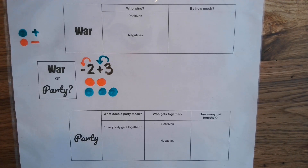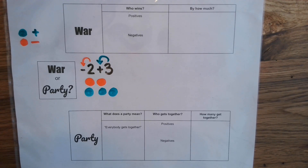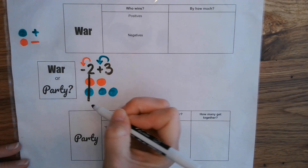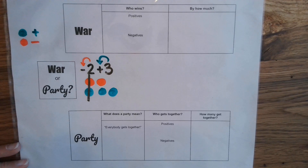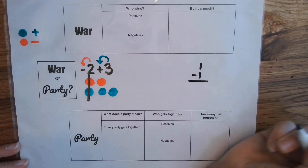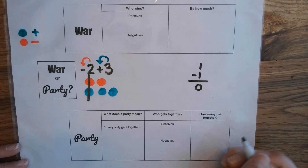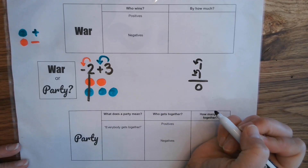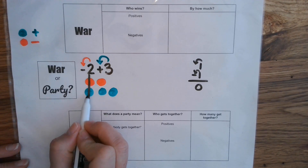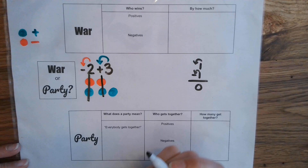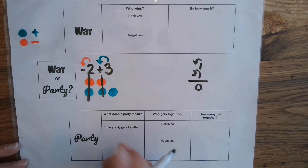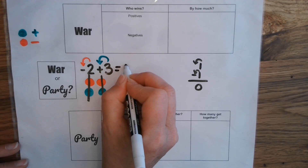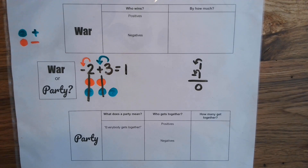They're not going to a party — they are going to war — because in this math universe they don't get along; they're different. Like old-timey battles where armies line up one-on-one, each positive and negative cancels each other out. This is the identity property: one positive and one negative cancel out to zero, just like positive one plus negative one equals zero. We see one survivor left, and that survivor is green — positive — so our answer is positive one.